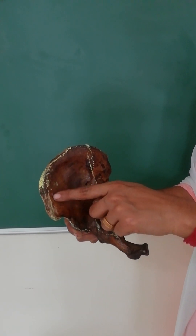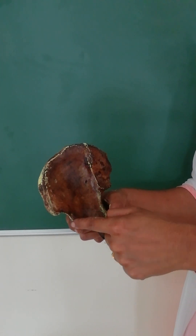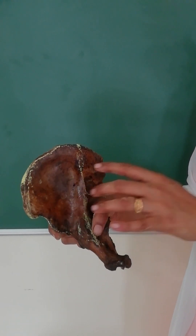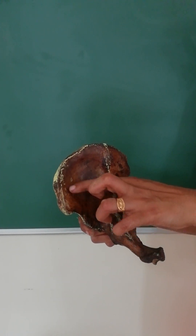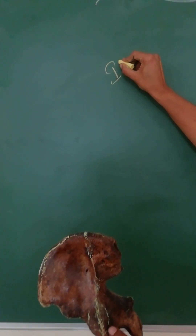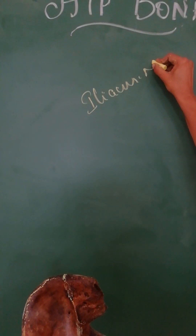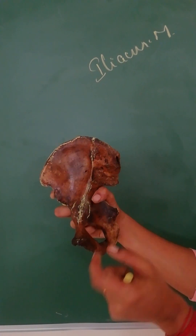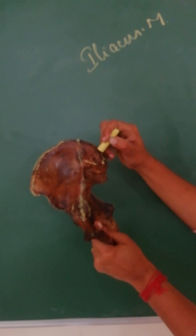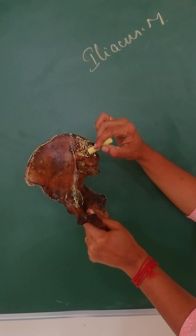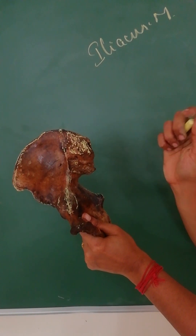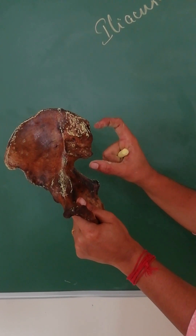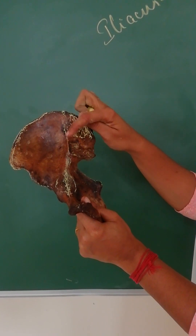Moving on to the surfaces: the first is the iliac fossa, which is a concave surface between the anterior border and medial border. The iliacus muscle attaches to the iliac fossa. The next surface is the sacropelvic surface, between the medial border and posterior border. The upper part of the sacropelvic surface is the iliac tuberosity.